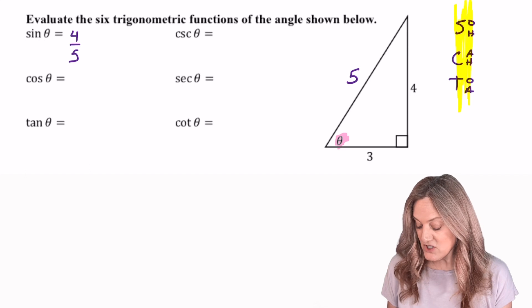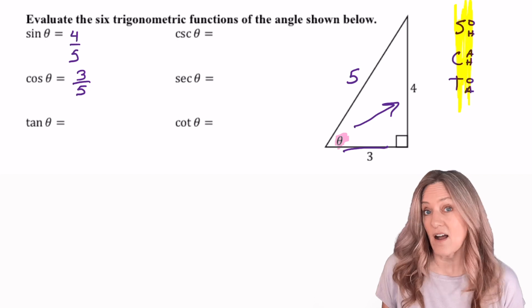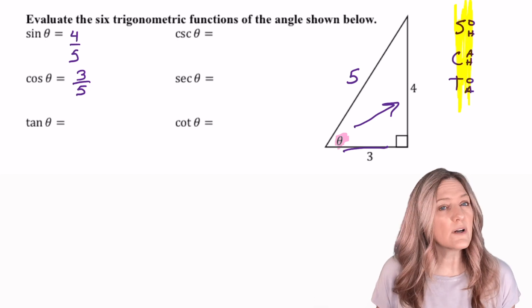For cosine, I need the side adjacent, which is our 3, and then hypotenuse, which is 5. And last tangent, opposite over adjacent, so 4 divided by 3.